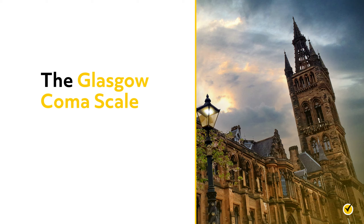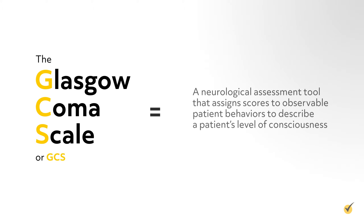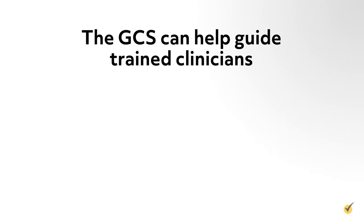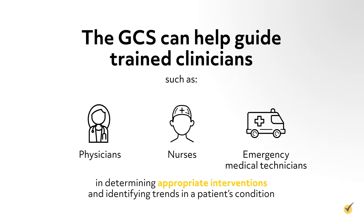The Glasgow Coma Scale got its name from the researchers who developed it at the University of Glasgow. The Glasgow Coma Scale, or GCS, is a neurological assessment tool that assigns scores to observable patient behaviors to describe a patient's level of consciousness. The GCS can help guide trained clinicians such as physicians, nurses, and emergency medical technicians in determining appropriate interventions and identifying trends in a patient's condition.